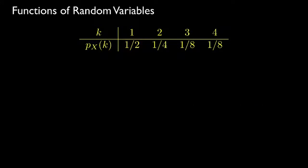As another example, suppose a discrete random variable has its range equal to the integers 1, 2, 3, and 4, and its probability mass function is as shown here. The probability that it equals 1 is 1/2, the probability it equals 2 is 1/4, equals 3 is 1/8, and equals 4 is 1/8.